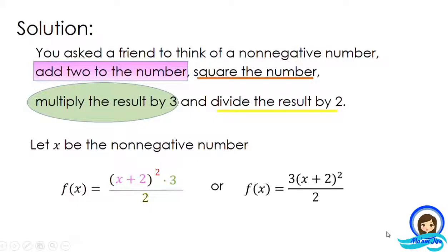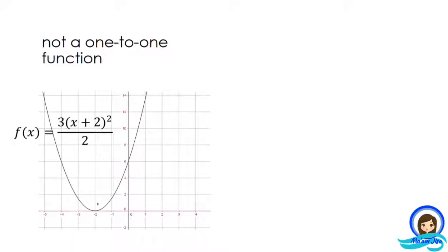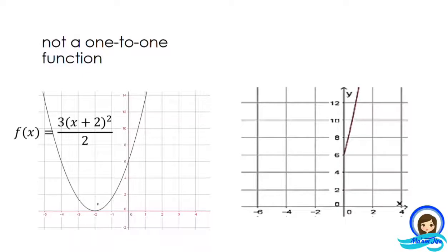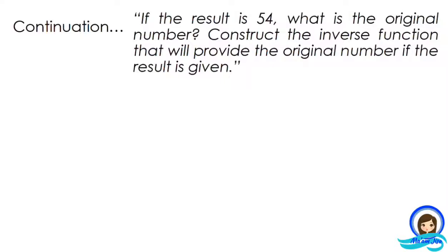This function is a quadratic function, and as you know from prior knowledge, its graph is a parabola. This is not a one-to-one function since it does not satisfy the horizontal line test — a horizontal line touches the graph at at least two points. However, in the problem, we need to think of a non-negative number. When we restrict the domain to x ≥ 0, the graph becomes one-to-one, and we can find its inverse.